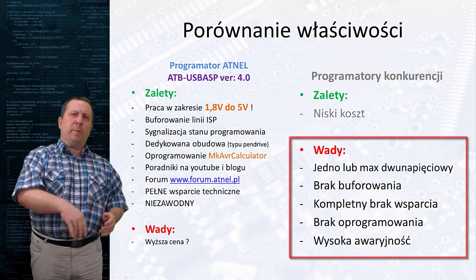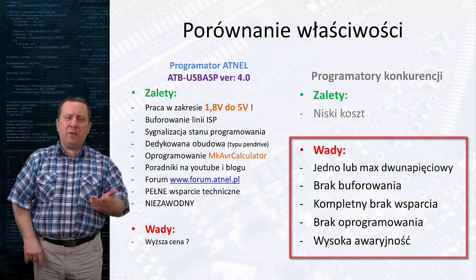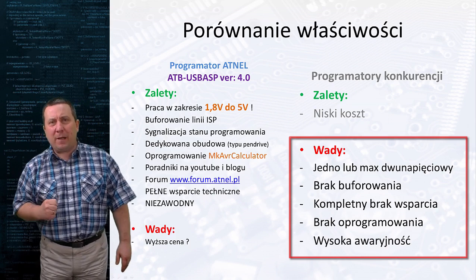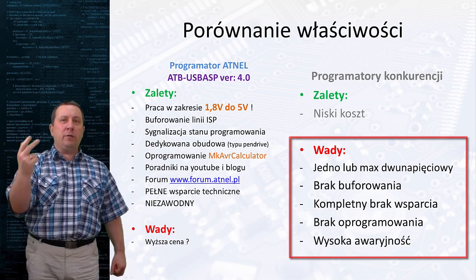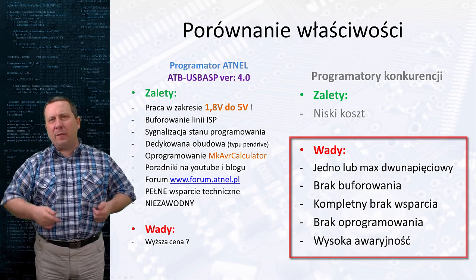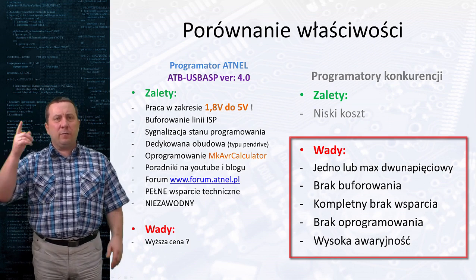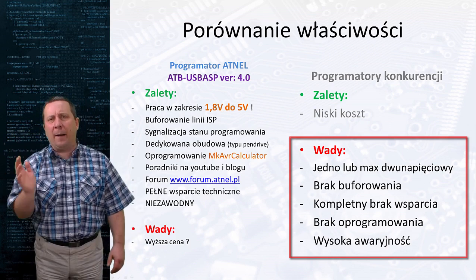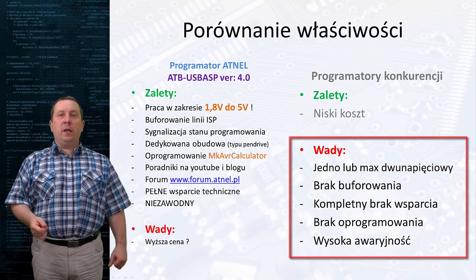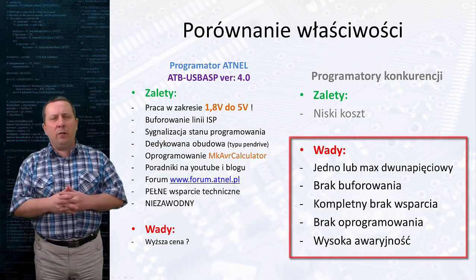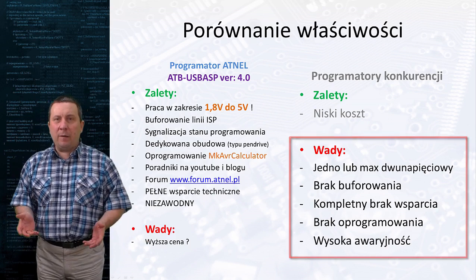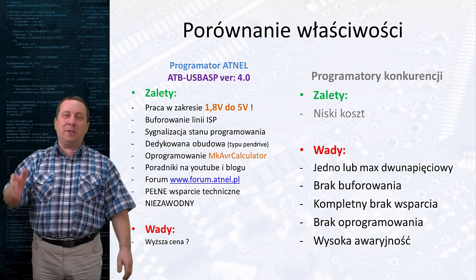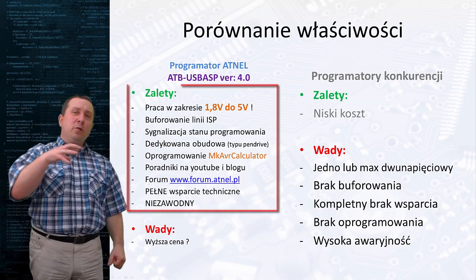Na naszym polskim rynku można było zakupić mega tanie programatory prawie po 10 złotych, które miały taki trik - nazywały się nie USB ASP, a USB ISP. Początkujący nie do końca rozróżniał USB ISP od USB ASP i kupował ten USB ISP, a potem się okazywało, że nie działa z AVRDUDE. Działa tylko z jakimś chińskim programem, ściągniętym z chińskiej strony, domyślnie w języku chińskim.